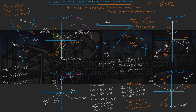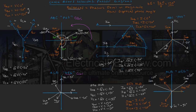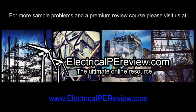Okay, that's it for phasor diagrams. The important thing here is to be able to tell the difference between an ABC positive sequence and an ACB negative sequence. The values given in problems won't always be perfect — you won't always have zero for reference, so be able to tell the difference. Know that your angles are always going to be displaced by 120 degrees in a three-phase system, and know that magnitudes will also be equal. For practice, I suggest trying all of this on your own without looking at the screen. That's it for this video — for more examples and to visit our premium review course, come see us at www.electricalpereview.com.